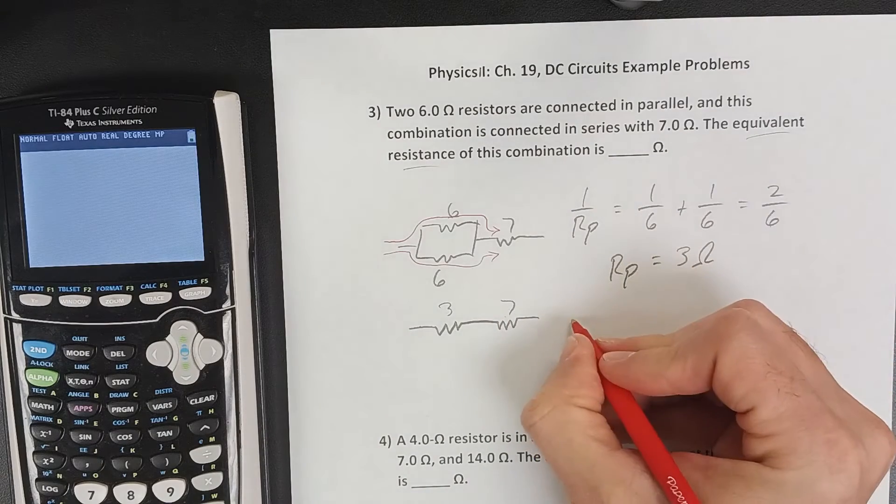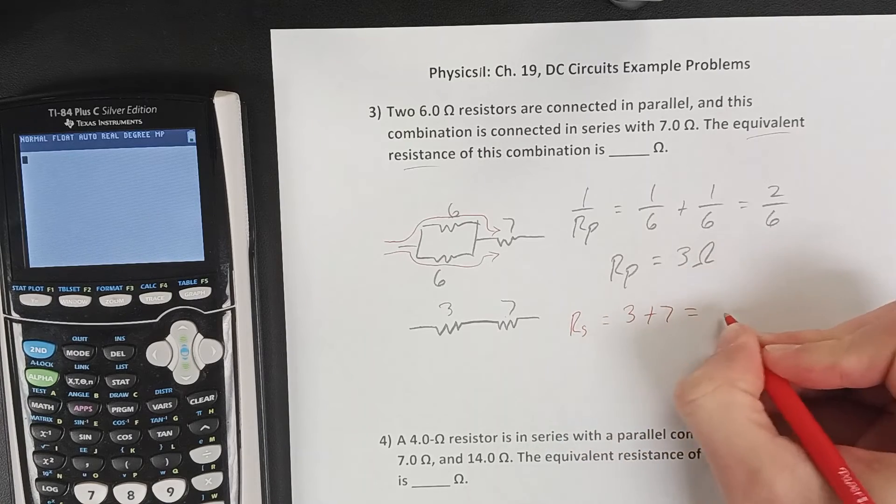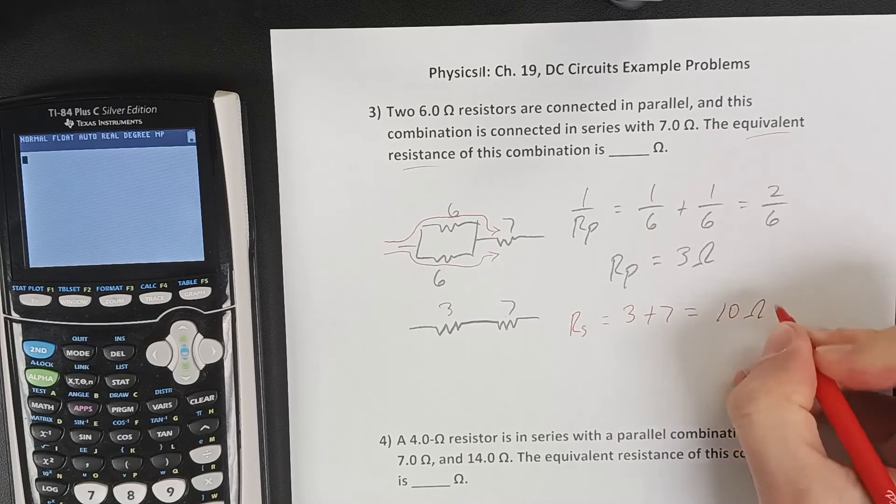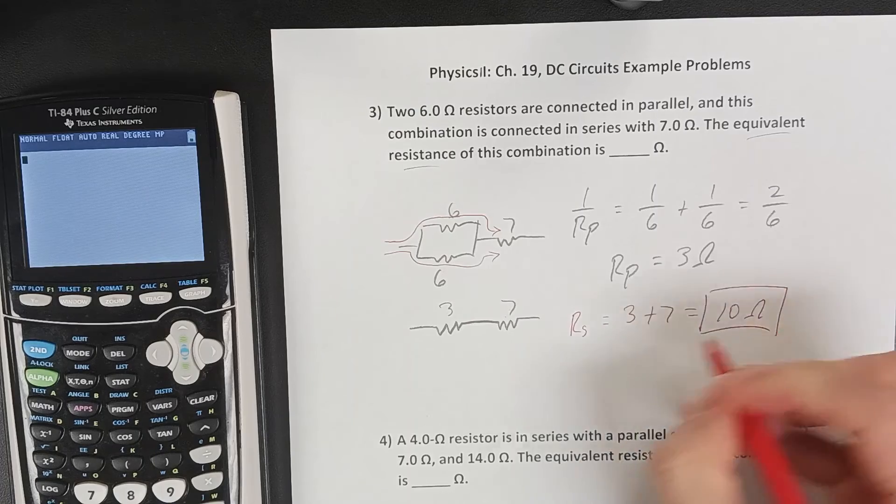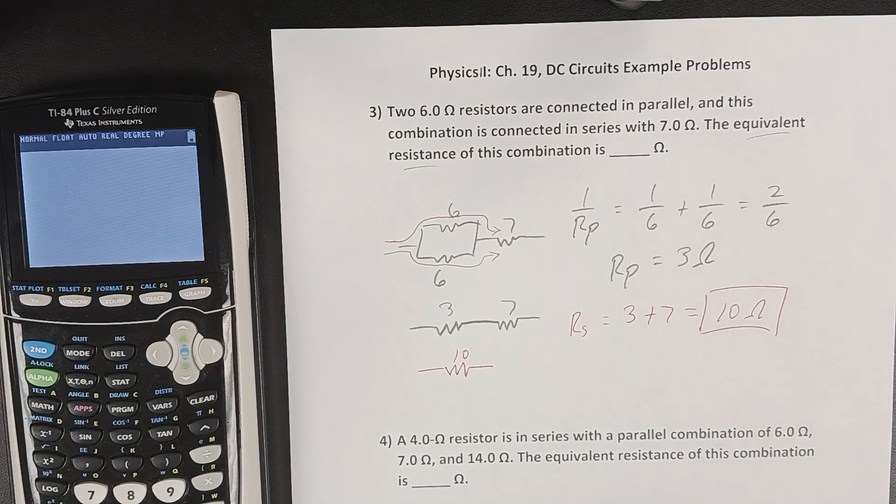And when we have resistors in series, we add those resistances together. So now in the end, it's like we just have one resistor with a value of 10 ohms.